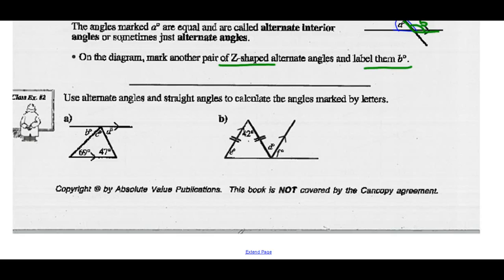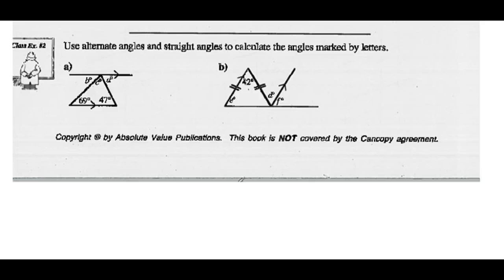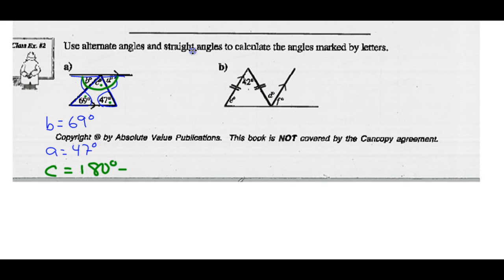Example 2: use alternate angles and straight angles to calculate the angles marked by the letters. I see a Z pattern with B, so B and 69 must be equal — B equals 69 degrees; they are alternate interior angles. I also have a Z pattern here, so A and 47 are equal — A equals 47 degrees. These three angles are along a straight line adding to 180, or are inside a triangle summing to 180. Either way, C equals 180 minus A and B, which is 180 minus 69 minus 47, giving angle C equals 64 degrees.